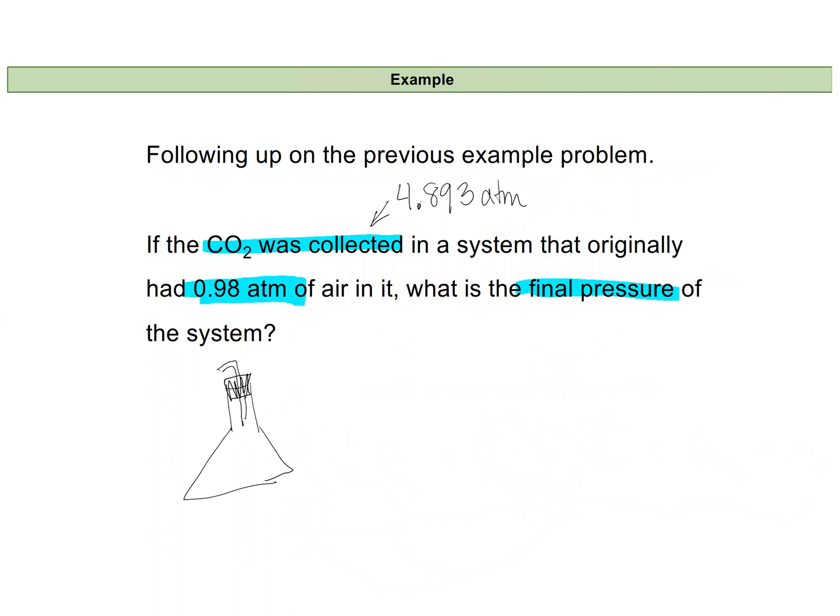If we're collecting this in an Erlenmeyer flask that was capped, we had some reaction. In this flask when we started we had 0.98 atmospheres of air, and then we add this 4.893 atmospheres of carbon dioxide. So our total pressure is going to be equal to the pressure of the air that was in the flask plus the pressure of the carbon dioxide that's generated and collected in the flask.